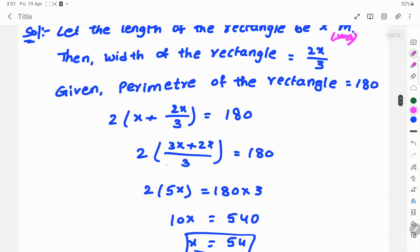So, 2 into 3x plus 2x by 3. Here 5x is equal to 180 into 3, because here 3 is divided with the number, then this 3 changes to left-hand side, then multiplies with the number.